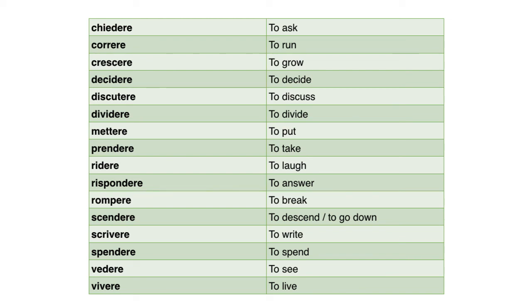So those are the ERE verbs. The activity I'm going to give you is very simple: I'll give you two of these verbs and ask you to conjugate them — to fill in little tables with the correct forms. Just go back to the part of the video where I show the table for correre, follow the steps of the pattern, add the right endings, and you're done with your homework.